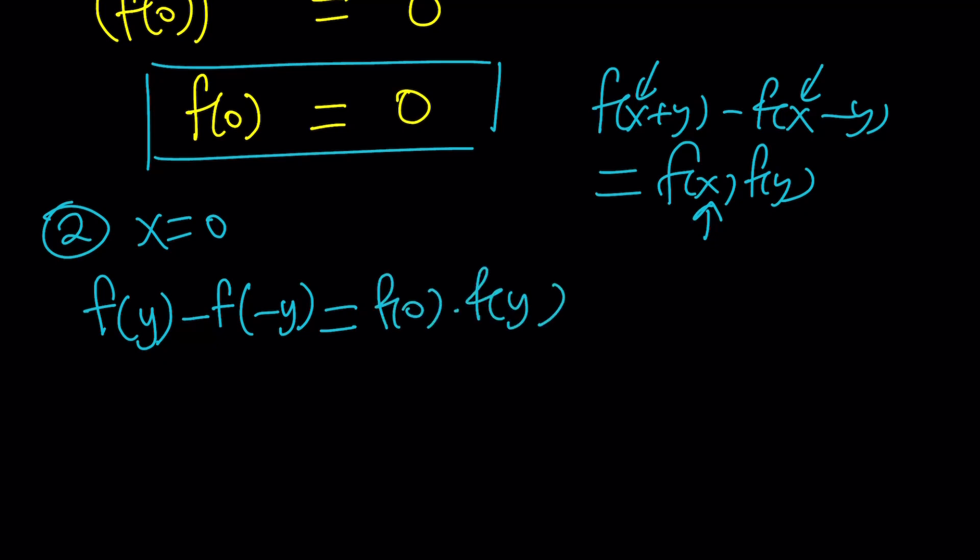equals f of 0 times f of y. Awesome. Again, leave the y alone. Don't replace it with anything. And replace x with 0. So what does this give us?